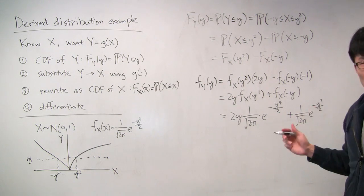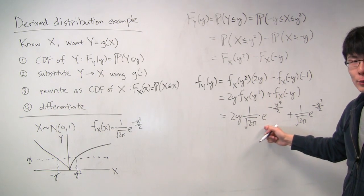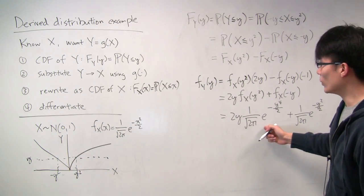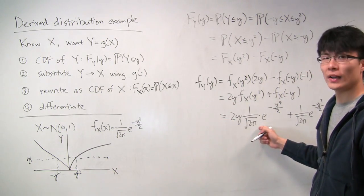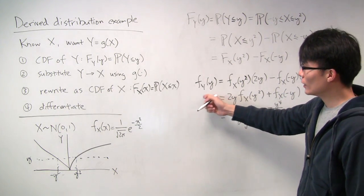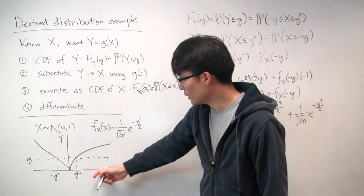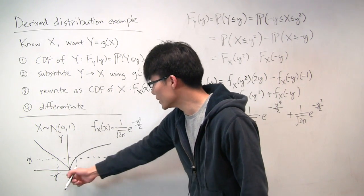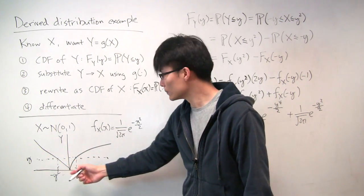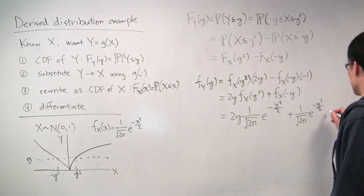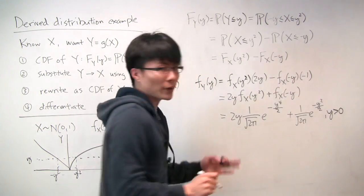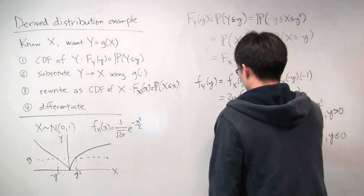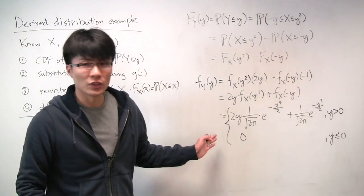The last thing to address is the valid range. It's important when calculating PDFs to always consider where they are valid. Looking at the relationship between x and y, we see that y can never be negative — no matter what x is, y gets transformed into some non-negative value. So this expression is valid only for y greater than 0, and the PDF equals 0 for y less than 0. This gives us the final PDF of y.